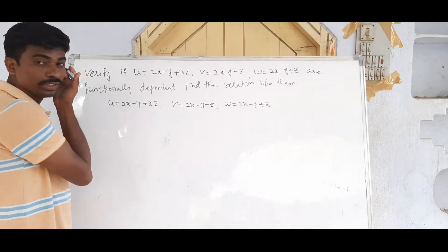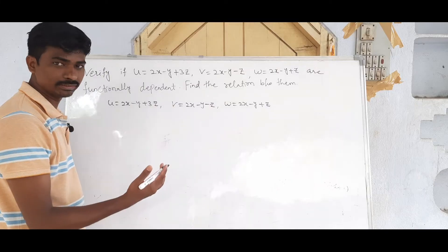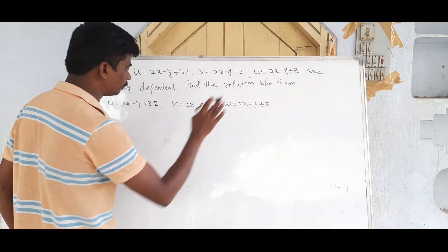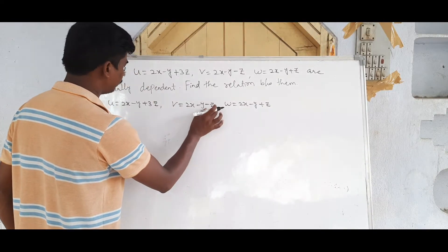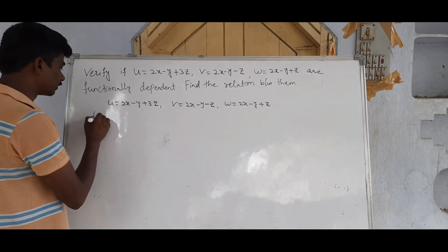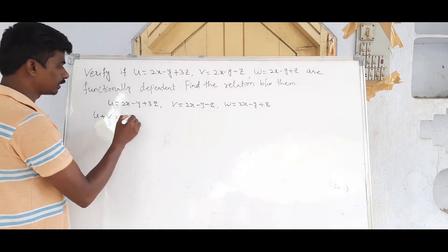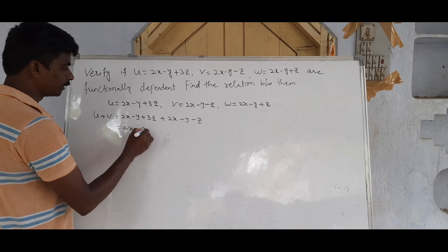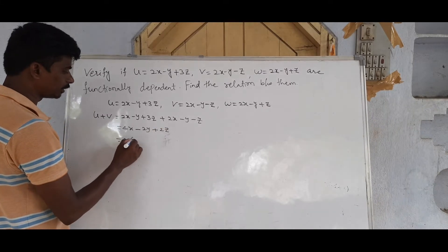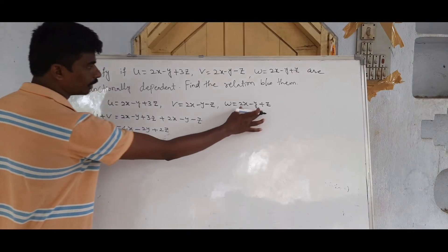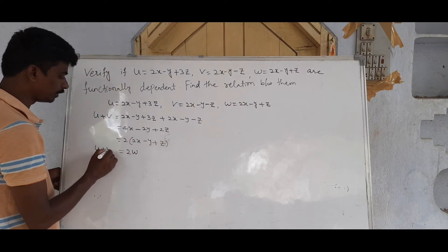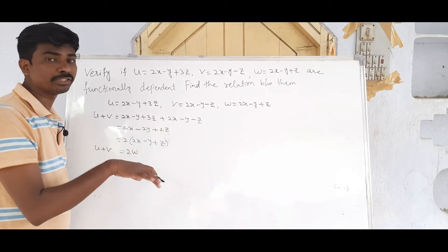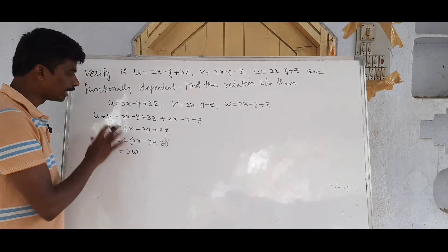Consider u + v = (2x − y + 3z) + (2x − y − z) = 4x − 2y + 2z = 2(2x − y + z). Since w = 2x − y + z, we get u + v = 2w.